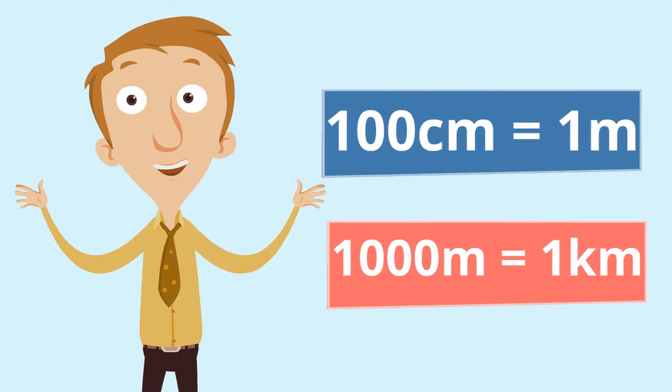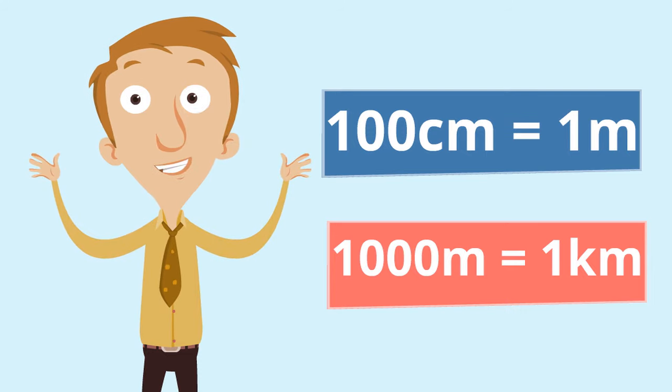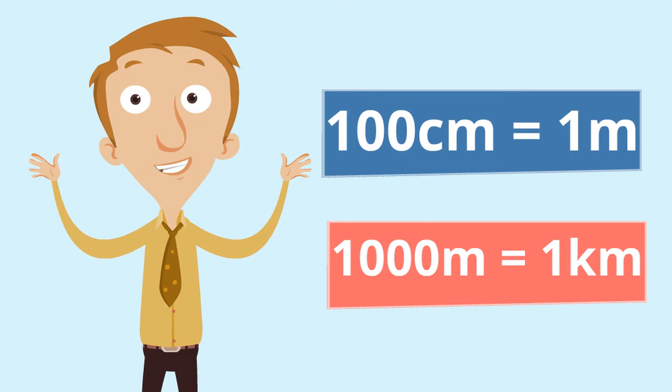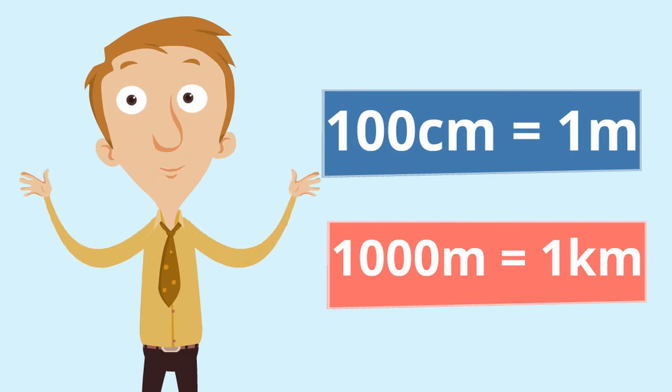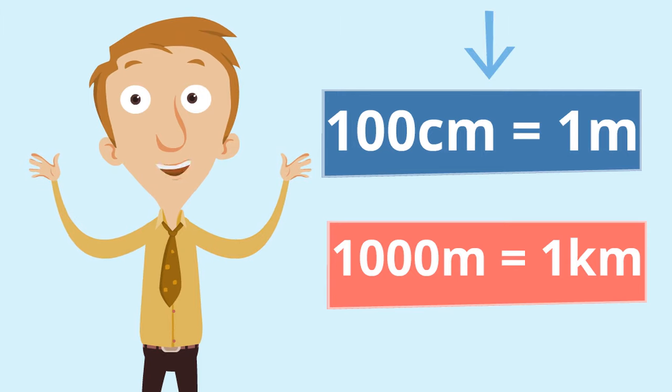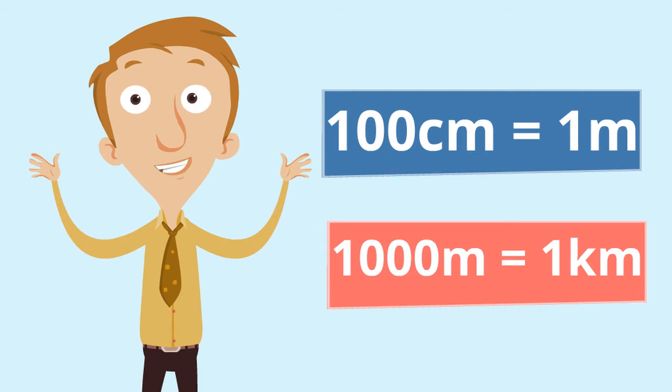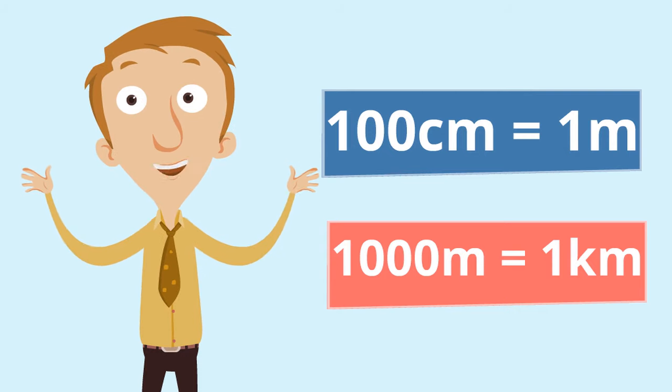So remember, 100 centimeters is equal to 1 meter, and 1000 meters is equal to 1 kilometer. We're going to be focusing in on this relationship fact today. So it's extremely important that you remember 100 centimeters equals 1 meter.